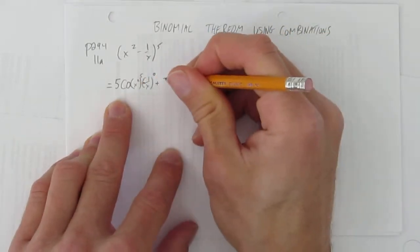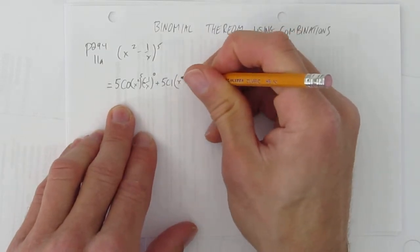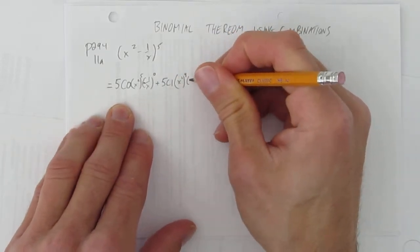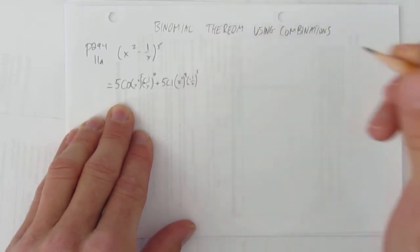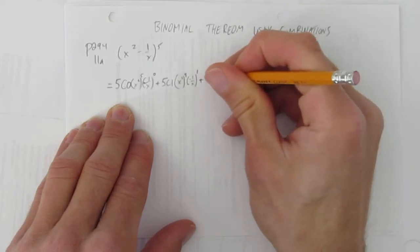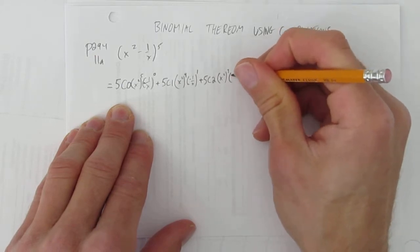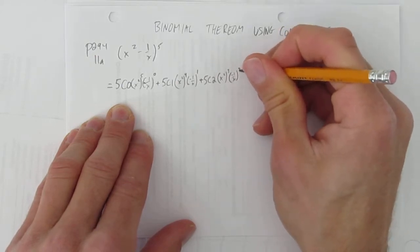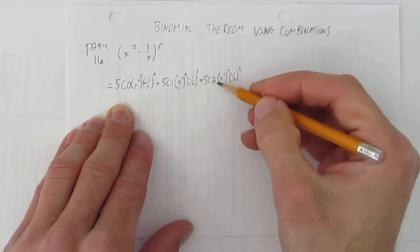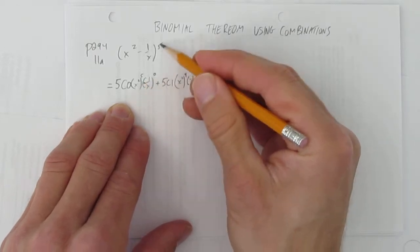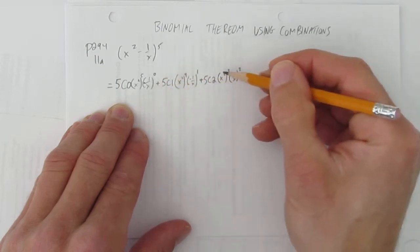Next, it's going to be five choose one, and now the first thing in the brackets — the exponent goes down one — and the second thing in the brackets, didn't forget the negative that time, and the exponent goes up one. Now five choose two: the first thing in the brackets to the power of three, the second thing in the brackets to the power of two. See the pattern? It's five choose zero, then five choose one, then five choose two. The first thing in the brackets starts at the exponent and counts down; the second thing in the brackets starts at zero and is going to count up.